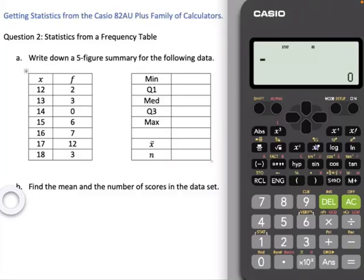We're going to calculate a five-figure summary from a frequency distribution table. There's a few more steps than there were in the previous video. Let's have a look at how we might do it.